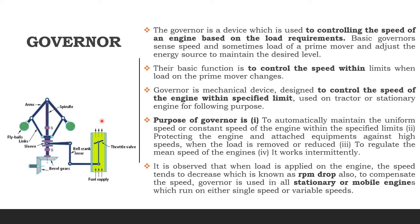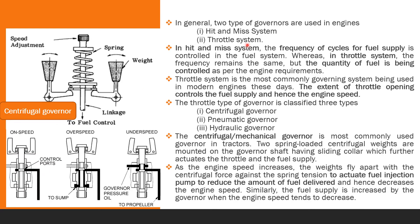So governor's work is clear — how it works and what its function is. Now we will discuss how it controls speed. In general, two types of governors are used. The first is the hit and miss system, and the second is the throttling system.